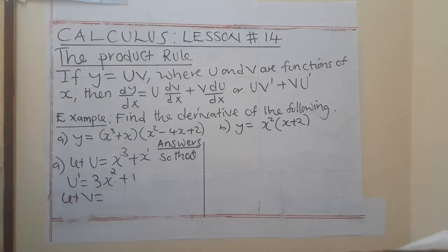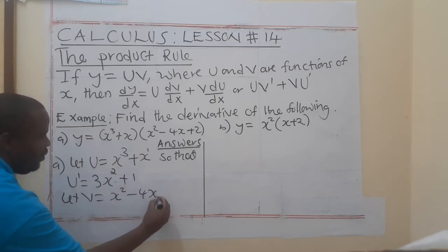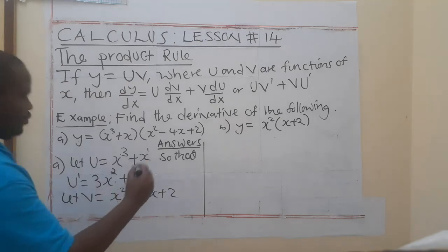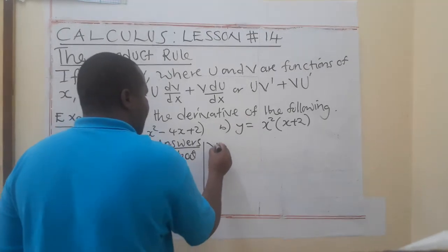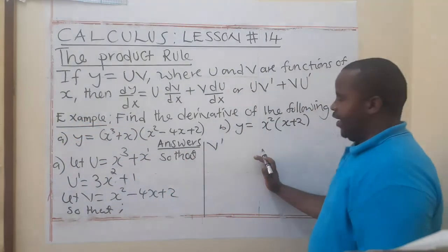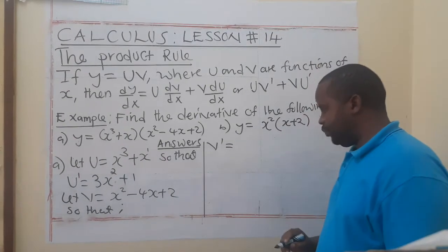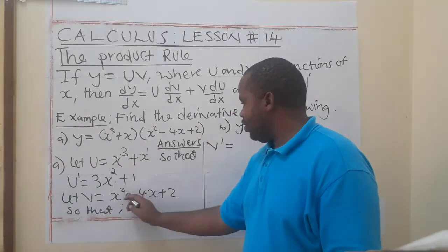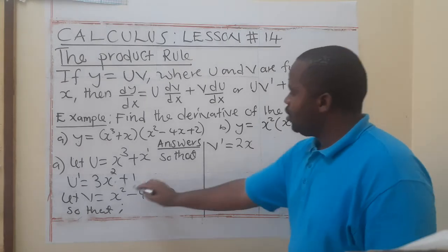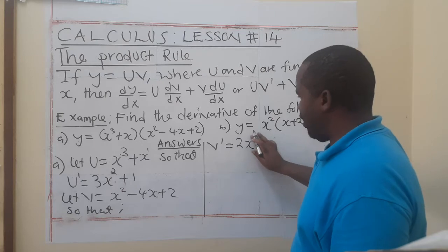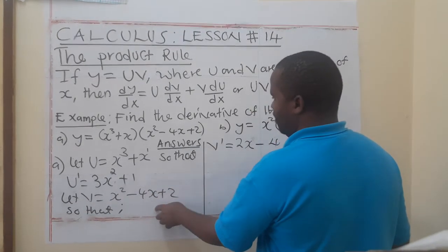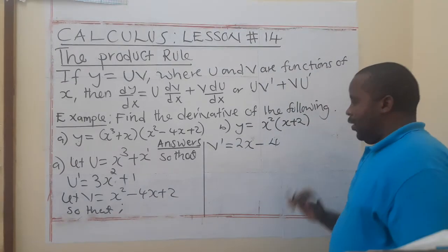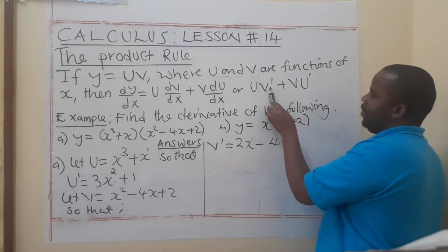Then let v be equal to the second function: x² - 4x + 2. So v-prime — when I differentiate this — here the coefficient is 1, so 2 times 1 is 2, and the power is 2 minus 1 = 1, so we have 2x. Minus: the coefficient of x is 1, so 1 times negative 4 is negative 4, and 1 minus 1 = 0, so x⁰ = 1, giving negative 4. So v-prime = 2x - 4. Now we have both v-prime and u-prime.